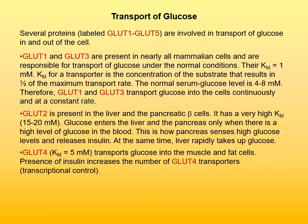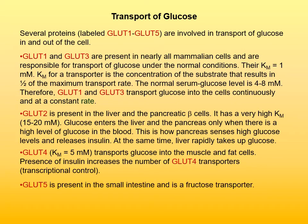GLUT-4 transporter has a Km of about 5 mmol and transports glucose into muscle and fat cells. The presence of insulin increases the number of GLUT-4 transporters through transcriptional control. Finally, GLUT-5 is present in the small intestine and is actually a fructose transporter.